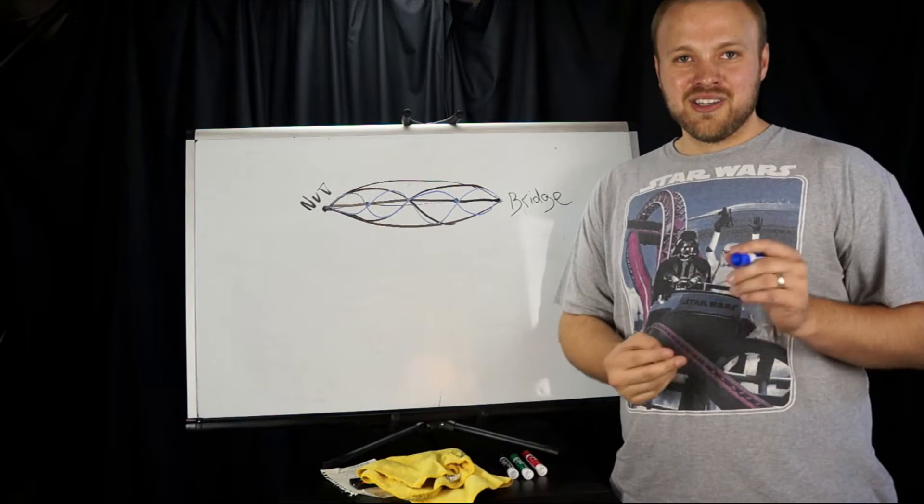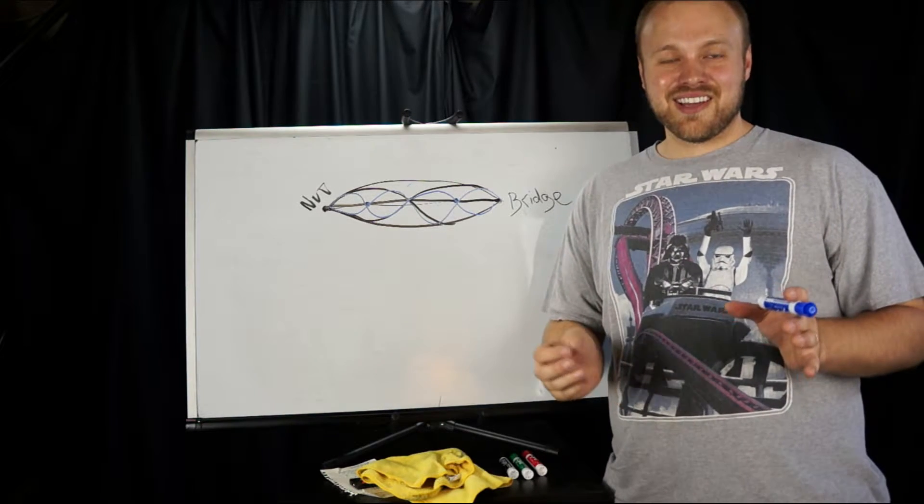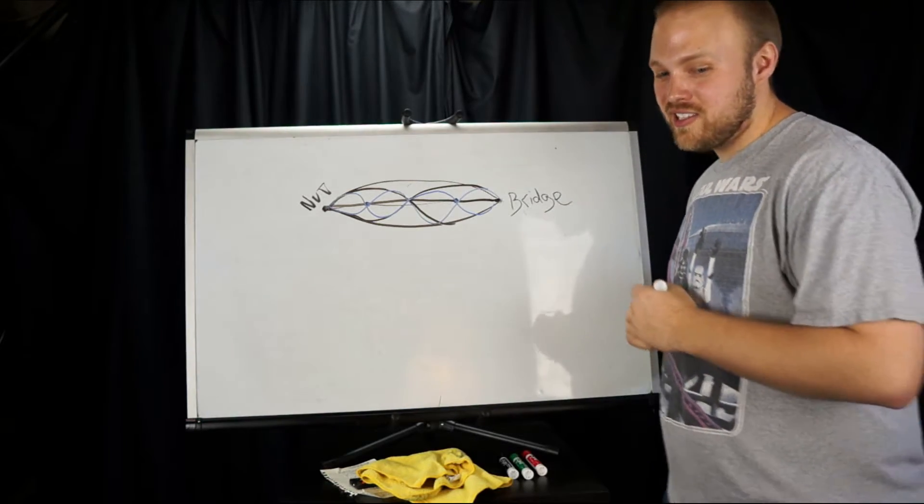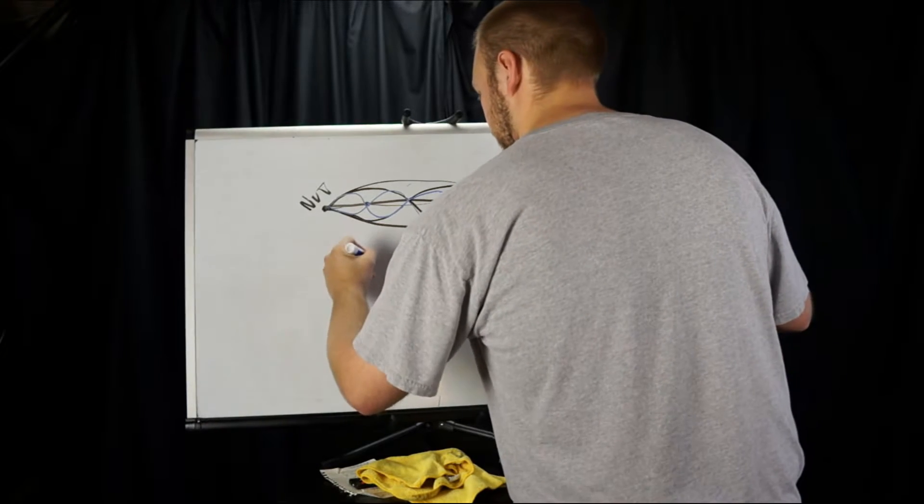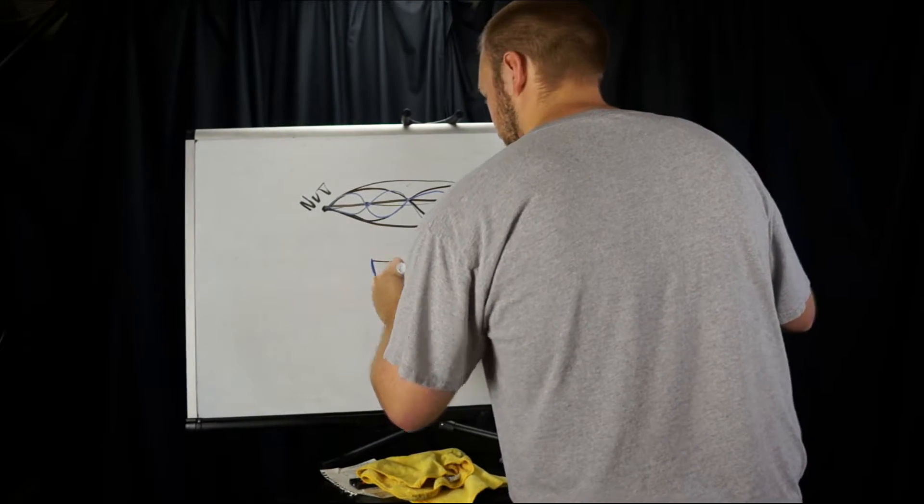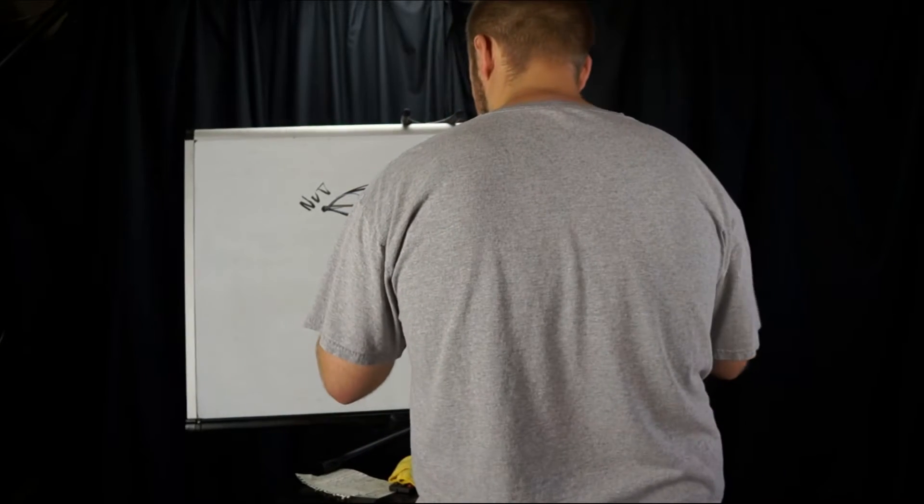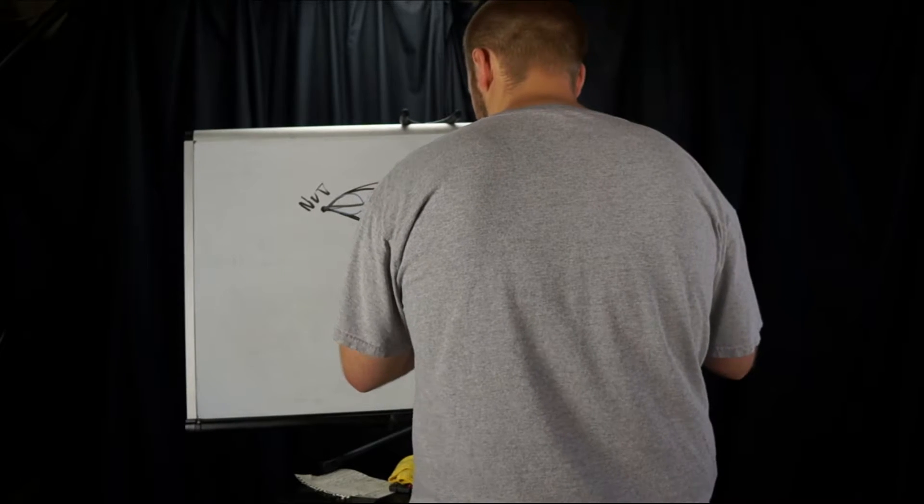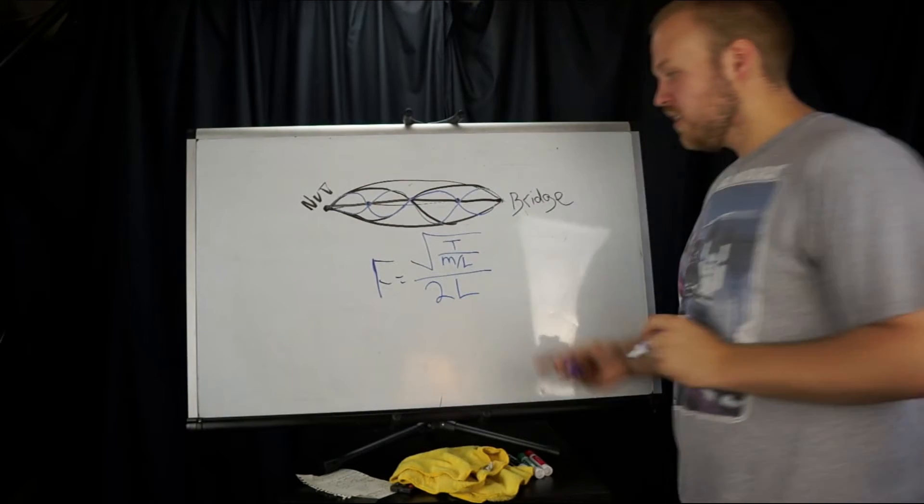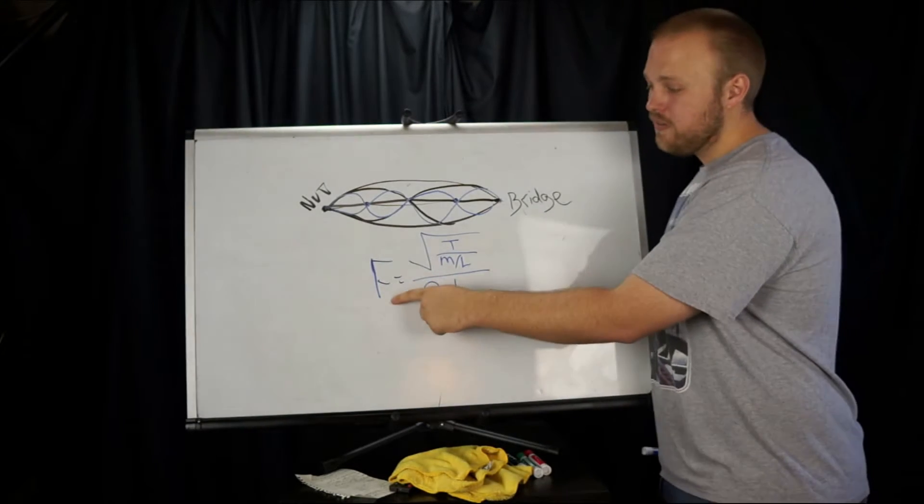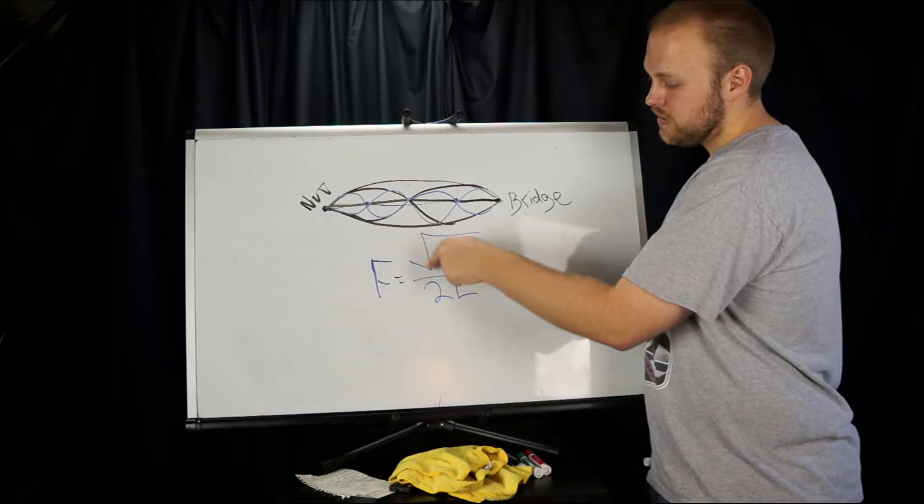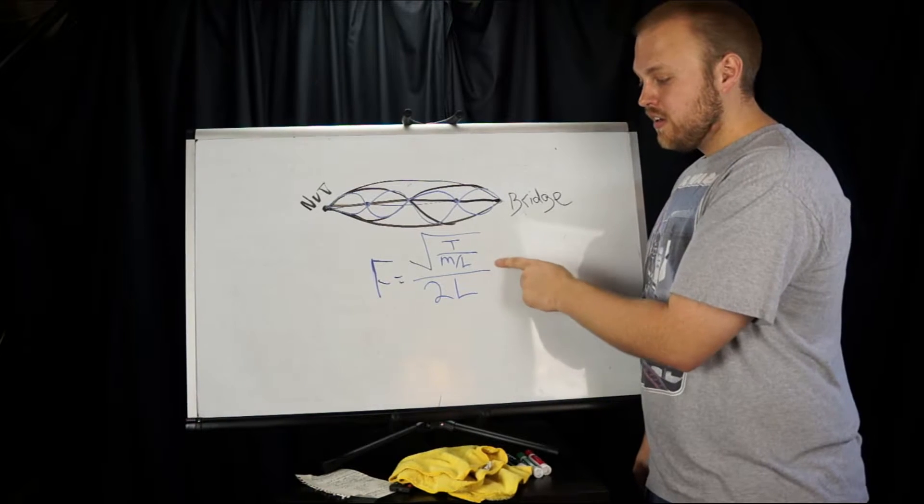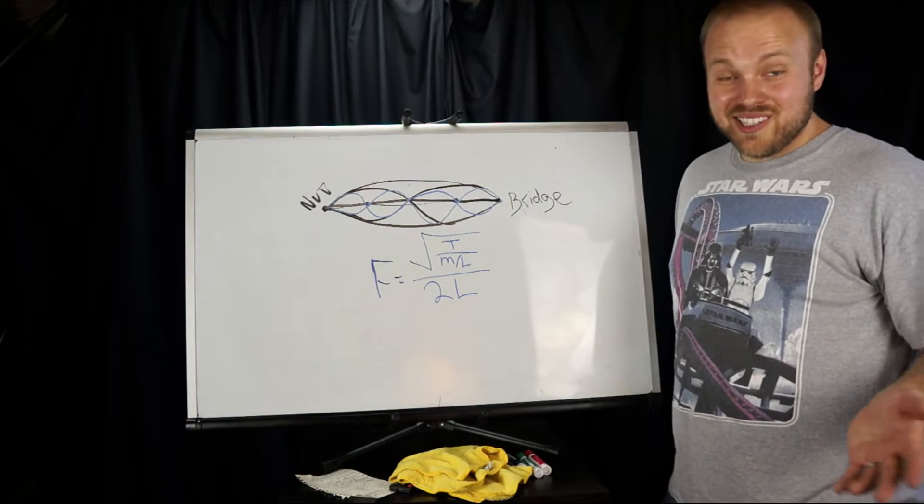Okay. That brings us to another equation that is magic, okay? If you don't believe in math and magic, I think I will have you believing by the end of this. This equation is for frequency equals the square root of tension divided by mass, which is the string mass divided by length divided by two times the length.